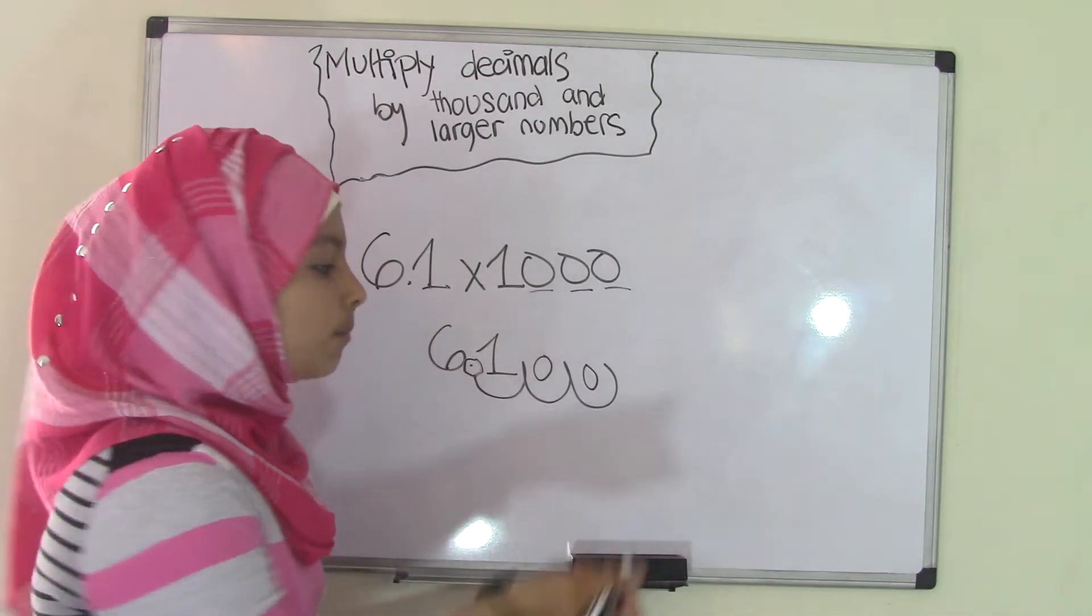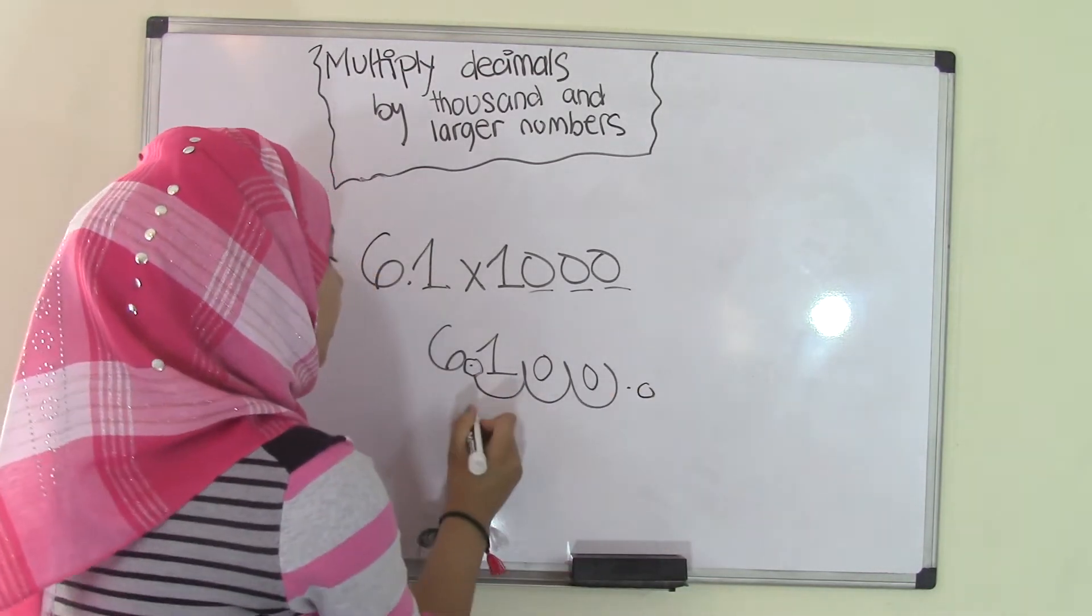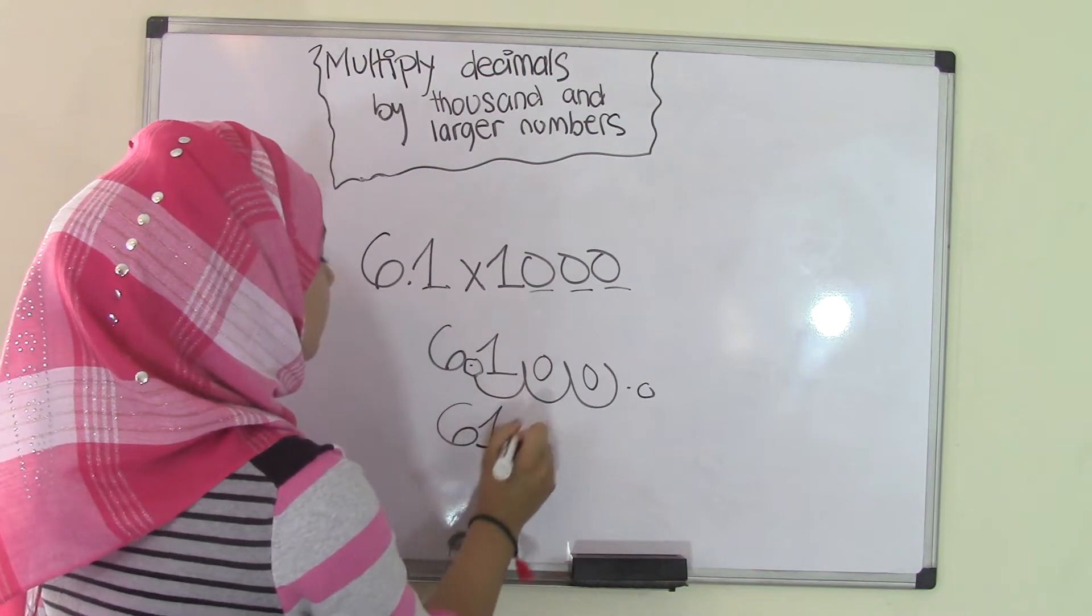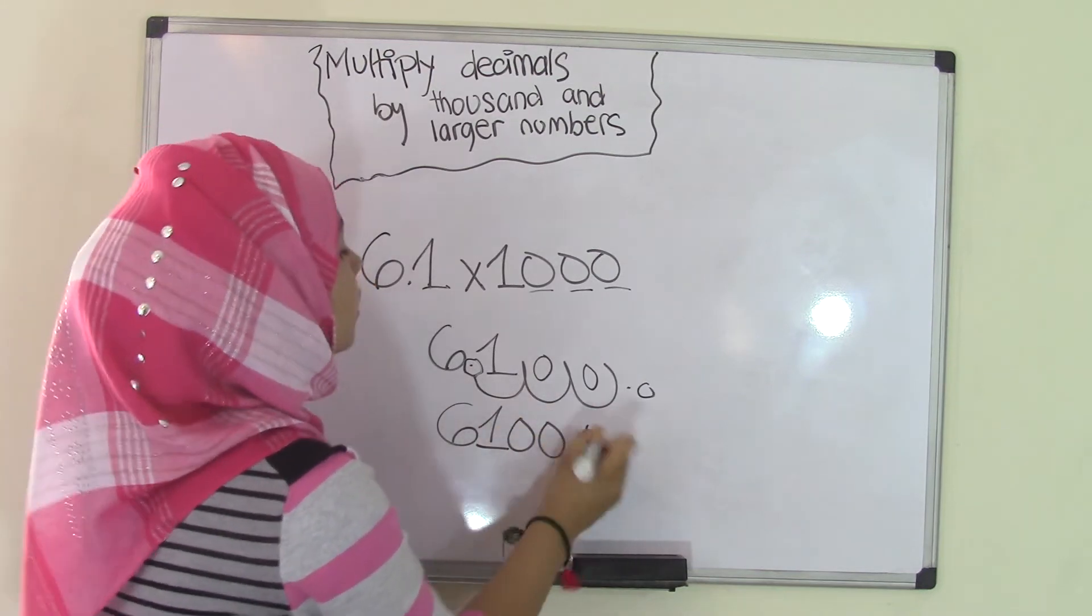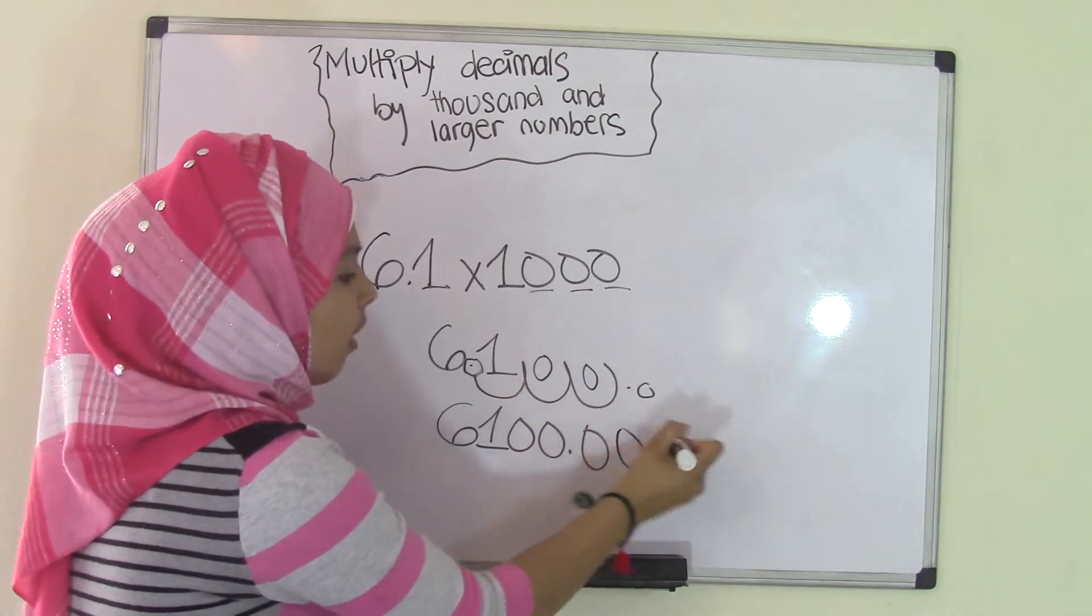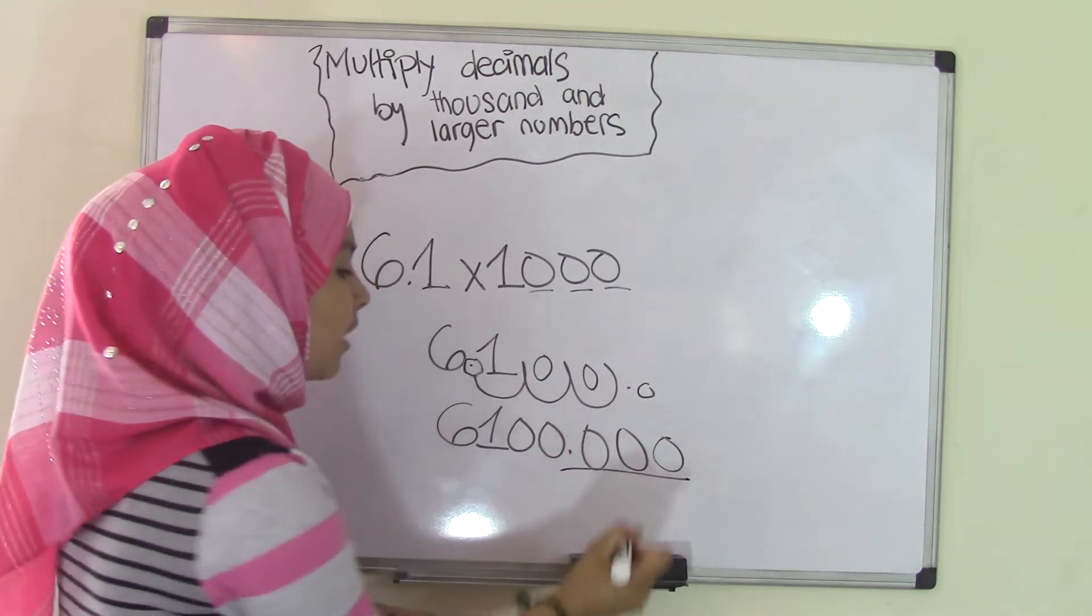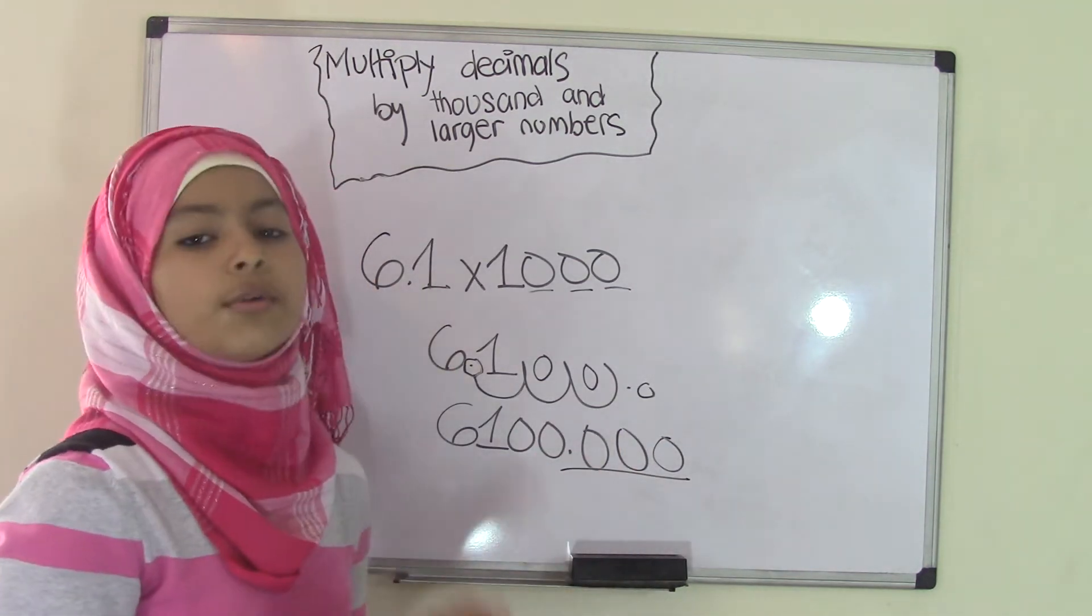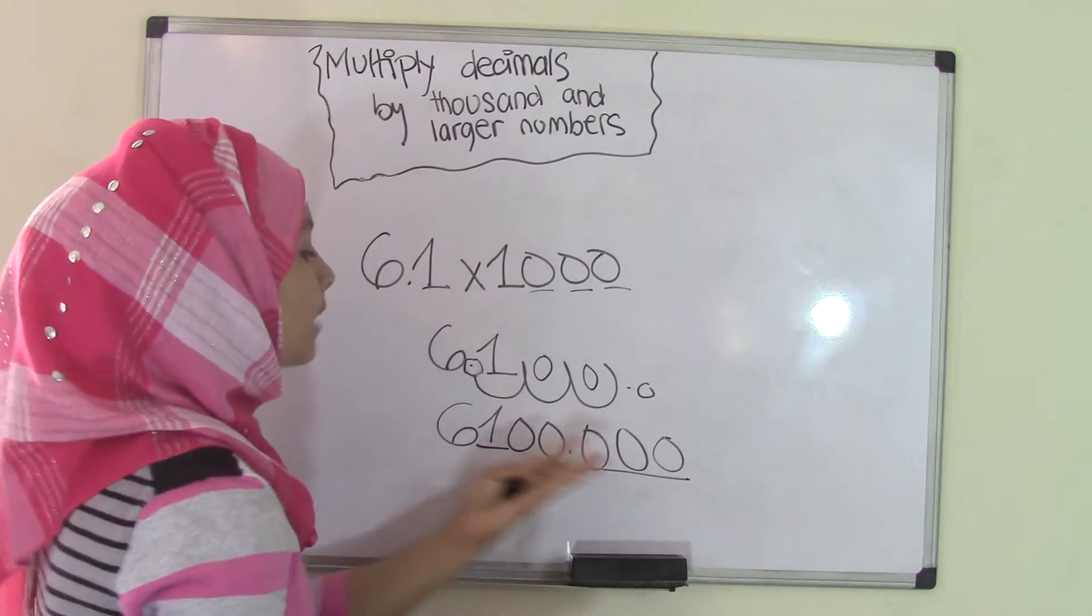Now, you could put like a .0, so that would become 6,100, and then .0, and you could add as many zeros as you want. But after the decimal point, if there's a zero, it does not hold any value. So, it's not important to add those zeros.